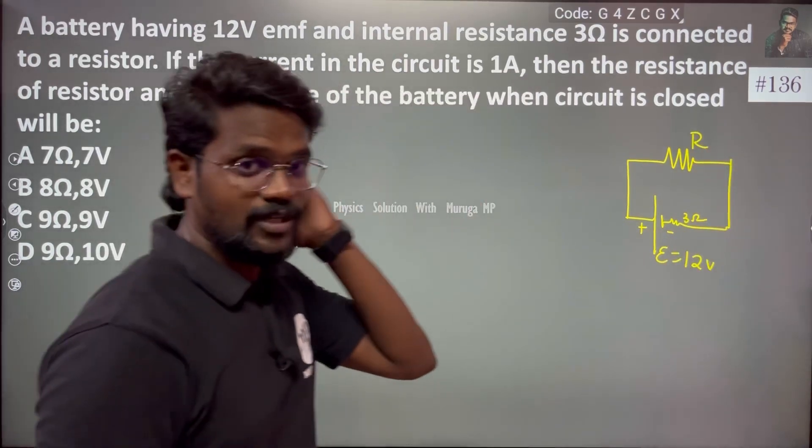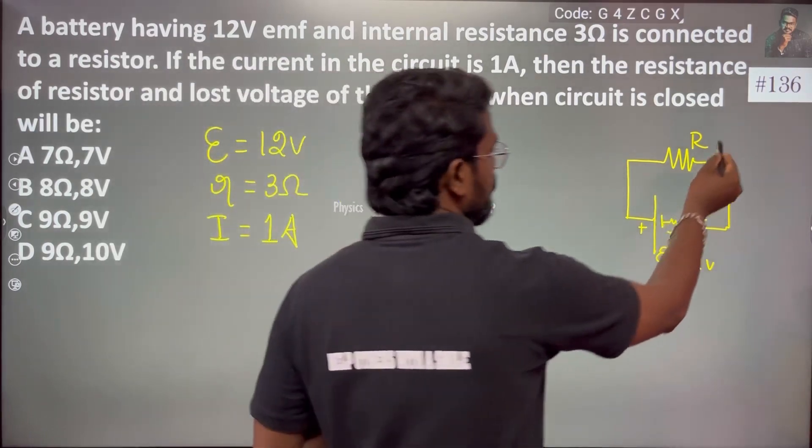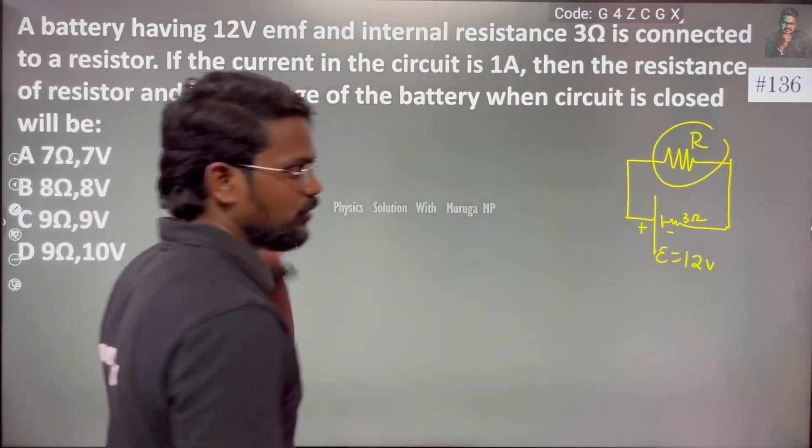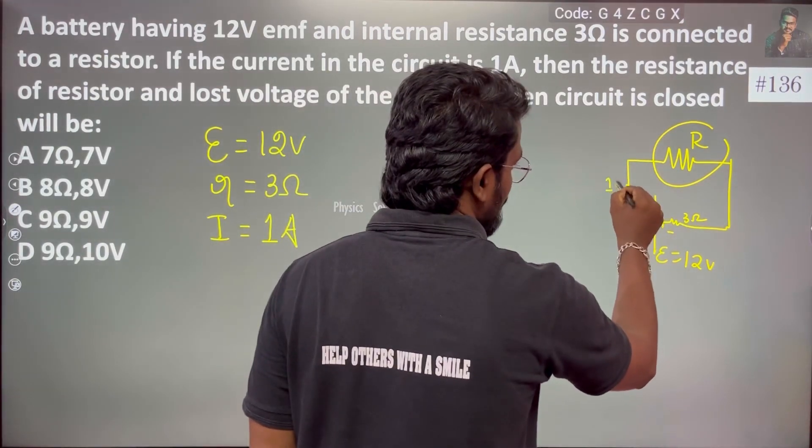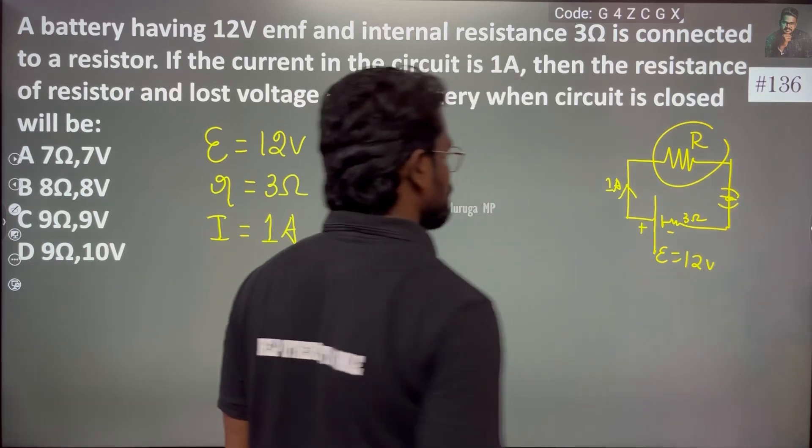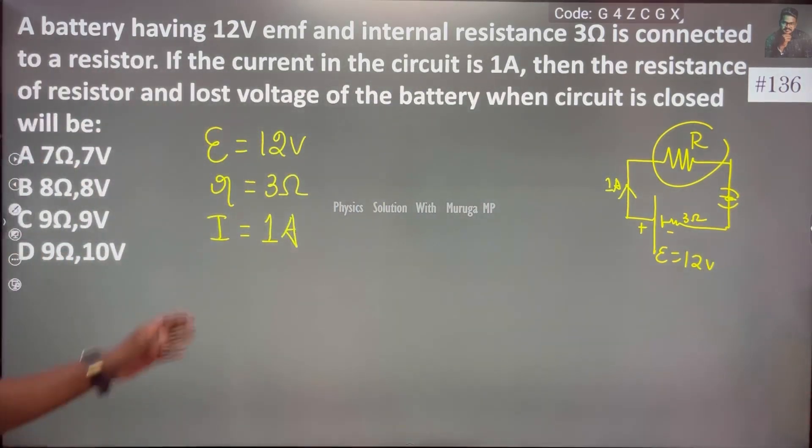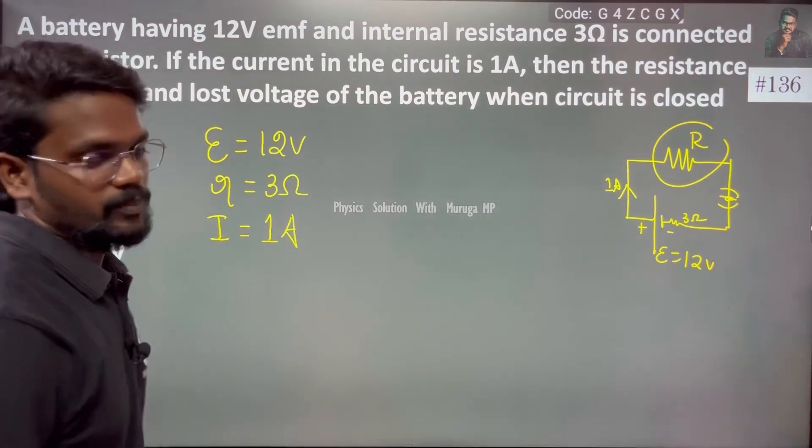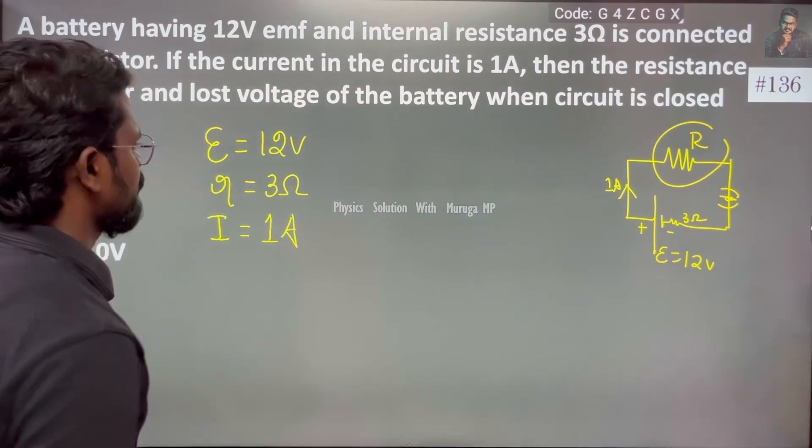What is the potential? If the current is 1 ampere, suppose the circuit is closed, then what will be the resistance and the potential drop? This is the potential drop. We have a general formula.